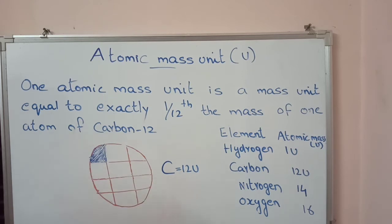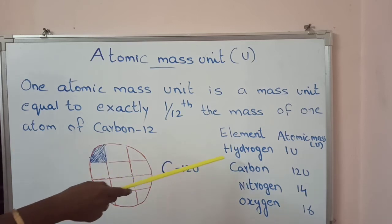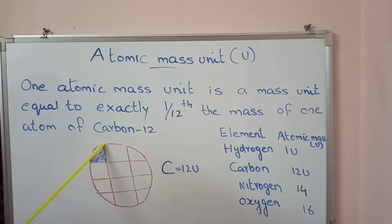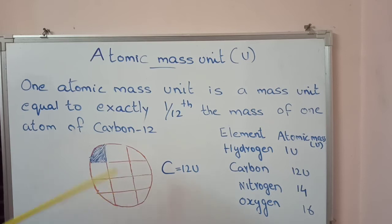So, 1 atomic mass unit is a mass unit equal to exactly 1/12 the mass of 1 atom of carbon-12. Mass of hydrogen is 1 u. Mass of carbon is 12 u. Mass of nitrogen is 14 u. That means nitrogen atom is bigger than carbon atom — mass of nitrogen is higher than that of carbon. Mass of oxygen is 16 u.